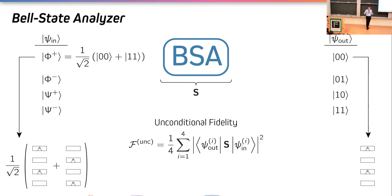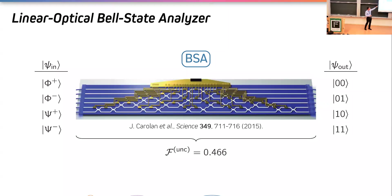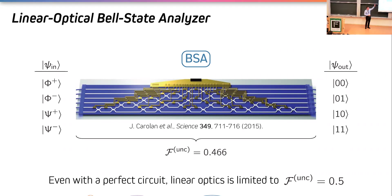This fidelity measure includes imperfections intrinsically — it is diminished as a result of imperfections like loss — giving you the full picture of how often your network is actually working. The natural question is how can we realize the Bell state analyzer using photonic architectures. One approach is with a linear programmable nanophotonic processor; however, back in 2015 when one was fabricated, they were only able to achieve an unconditional fidelity of 0.466, and even with completely perfect linear optics you can only reach an unconditional fidelity of 0.5.